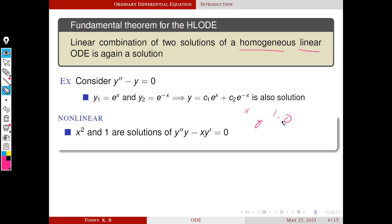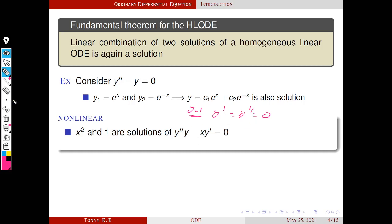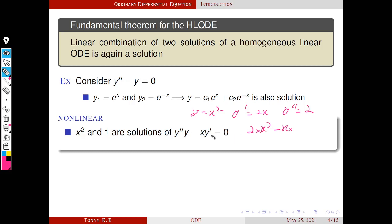You can verify that 1 and x squared are solutions of this non-linear differential equation. For y equals 1, y dash and y double dash are both zero, so the left-hand side becomes zero. For y equals x squared, y dash equals 2x and y double dash equals 2, so the left-hand side becomes 2 times x squared minus x times 2x, which is 2x squared minus 2x squared, equals zero. So x squared and 1 are both solutions of this non-linear homogeneous differential equation.